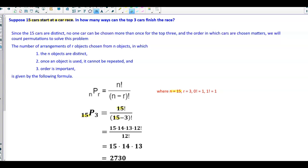And then we know that R is going to equal 3, because that represents the top 3 cars finishing the race.